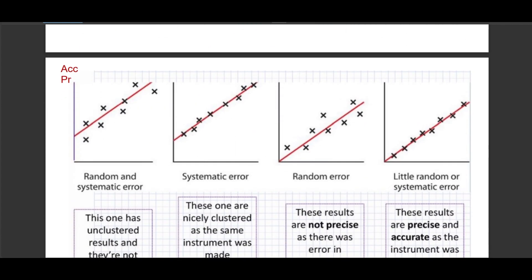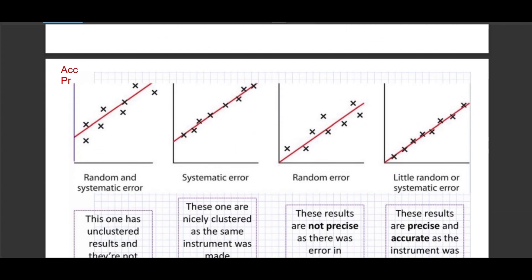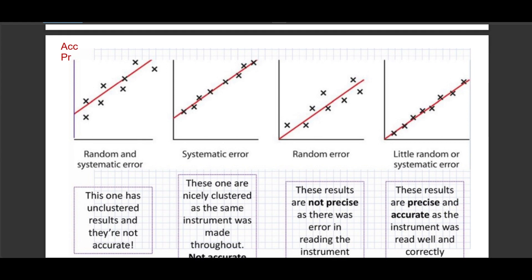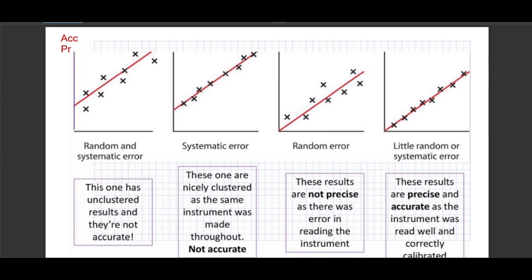Moving on to graphs — you will encounter these in your examination. If there is a random error, the points will be scattered, sometimes above the line and sometimes below it. If there is a systematic error, the points will be very close to each other but there will be a false origin.